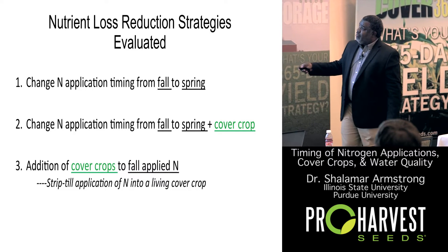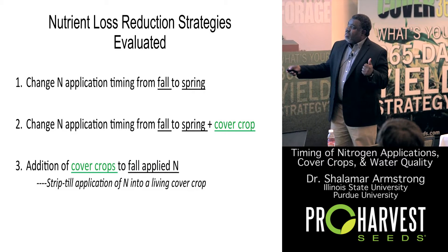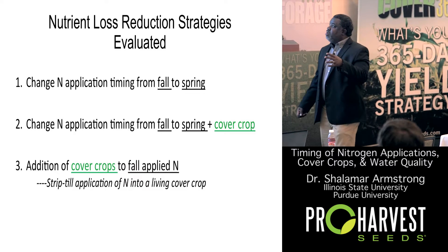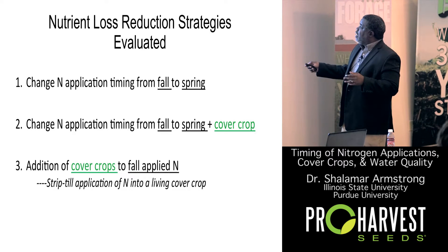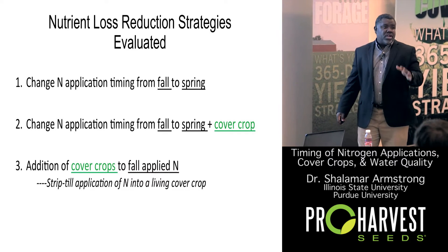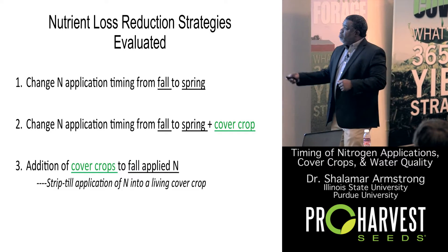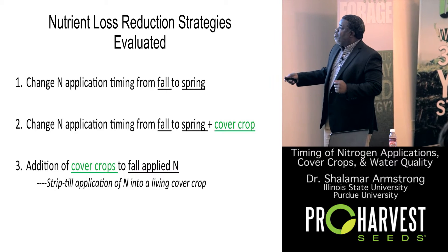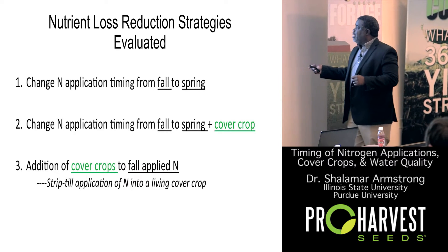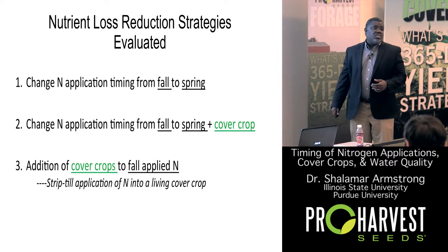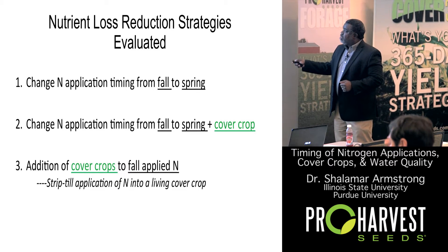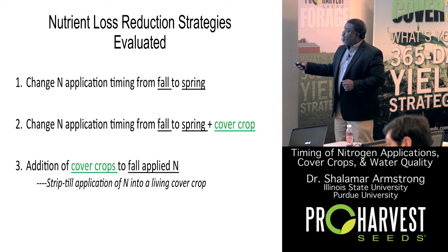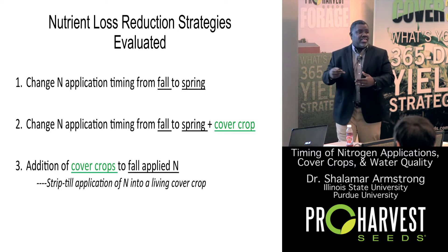Nutrient loss reduction strategy - we evaluated number one in that strategy: if you change the nitrogen application from fall to spring, we can make a reduction. Number two, if you change the nitrogen from fall to spring and then add cover crops, you make a larger reduction. The idea is that these two nitrogen conservation practices are coupled and additive.